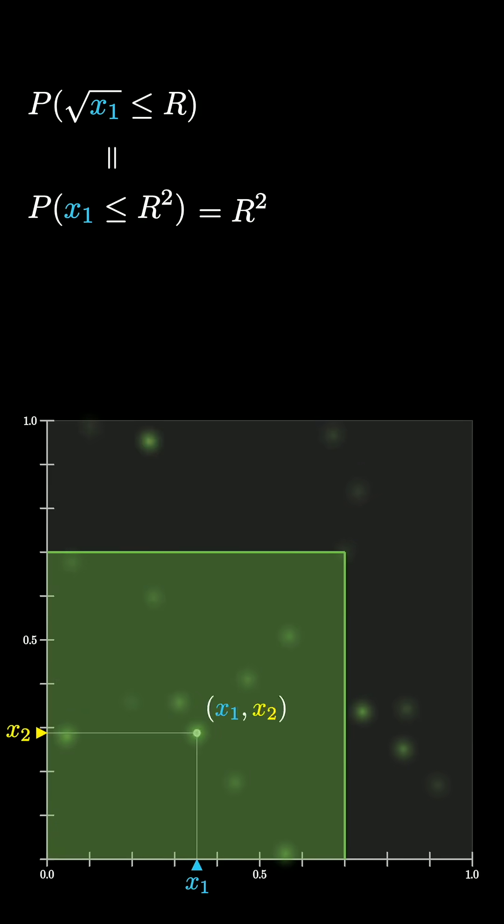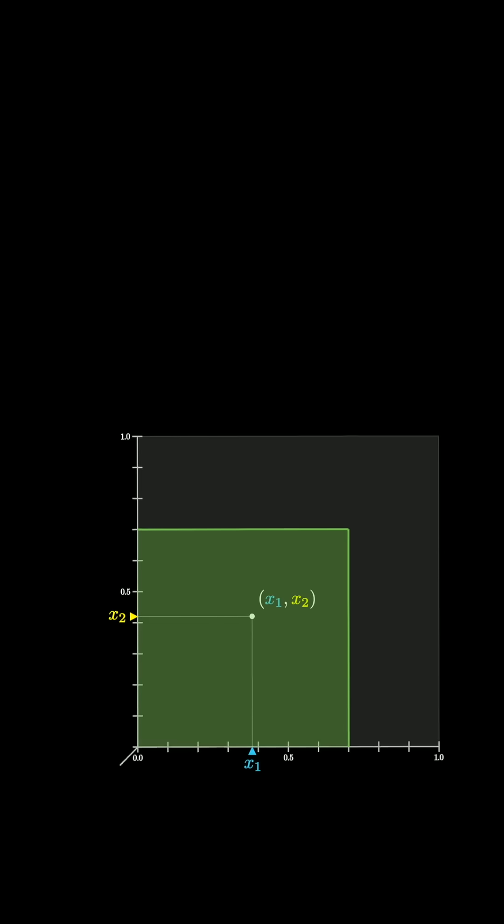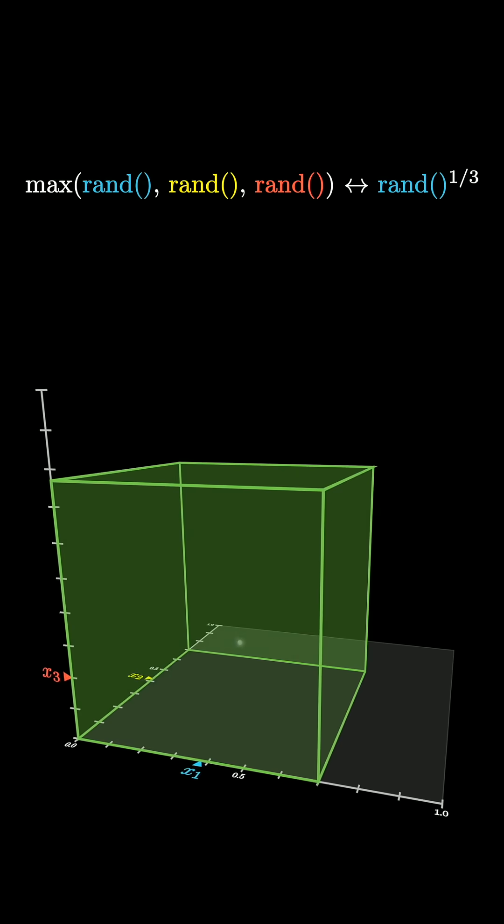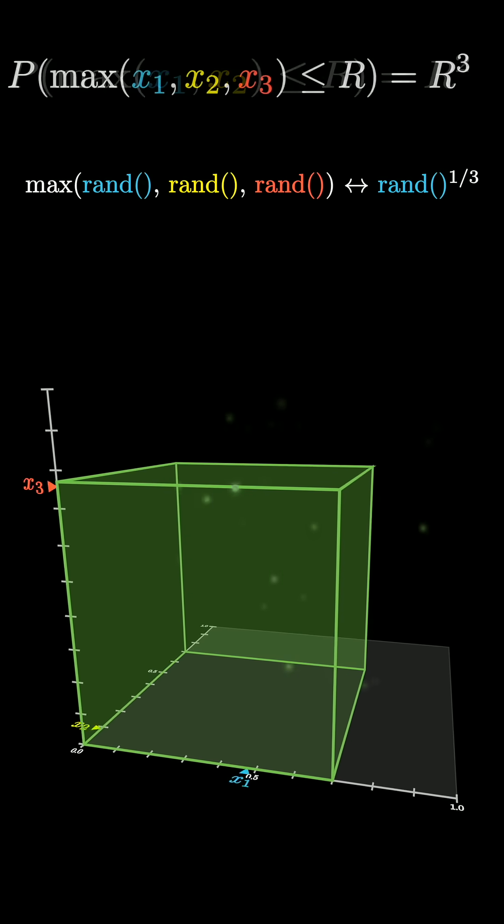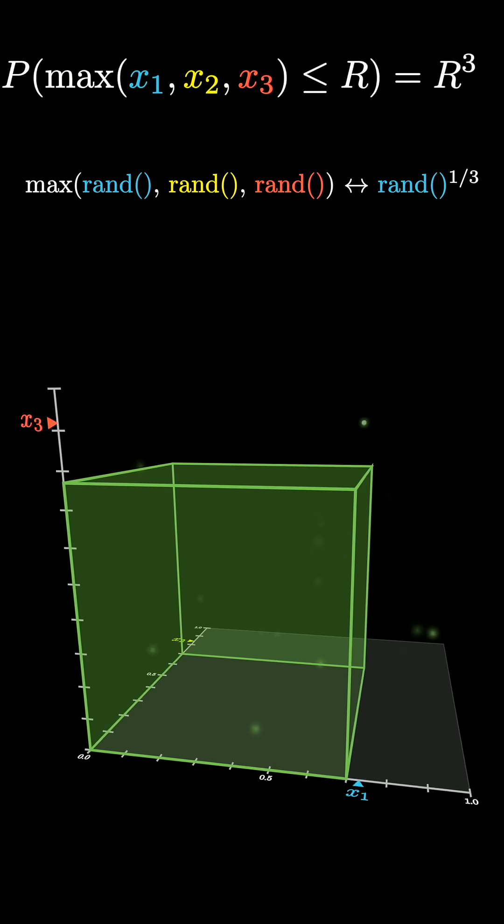So both of these processes have the same cumulative distribution function. That's why they're identical. Essentially, identical reasoning will show that if you take the maximum of three such random variables, it has the same effect as taking the cube root of one of them.